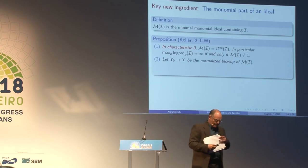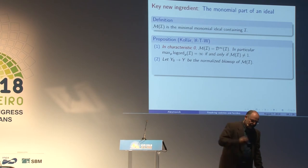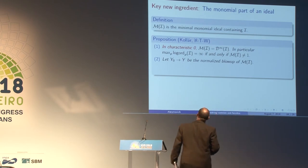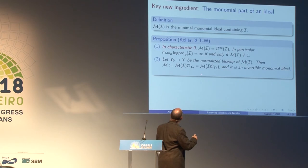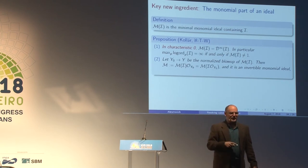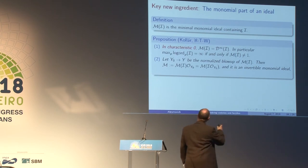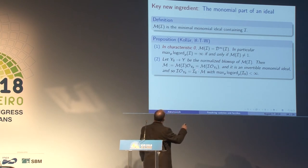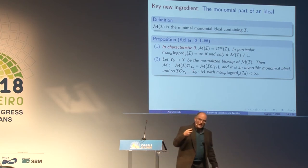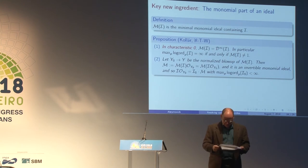Here's the first step in order reduction: if you have something of infinite order, you want to reduce from infinite to finite. If you blow up the monomial part of an ideal and normalize, then taking the monomial part of the new ideal is the same as pulling back the monomial part of the old ideal — monomial saturation commutes with monomial blowing up. Since it's a blow up it becomes an invertible monomial ideal, and the pulled-back original ideal becomes the product of a new ideal by a monomial ideal, and I₀ has finite logarithmic order.